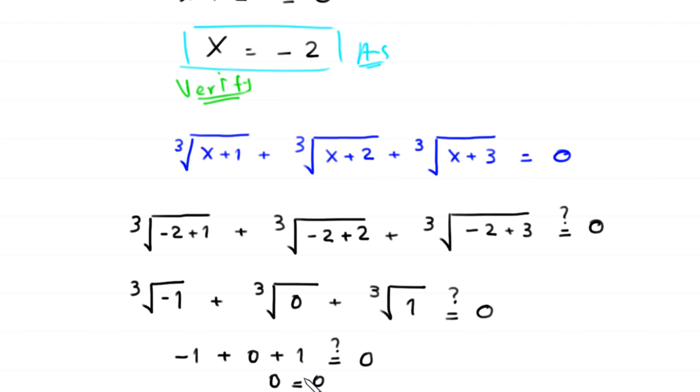This gives negative 1 plus 0 plus 1 equals 0, which equals the right hand side, confirming that x equals negative 2 is a valid solution.